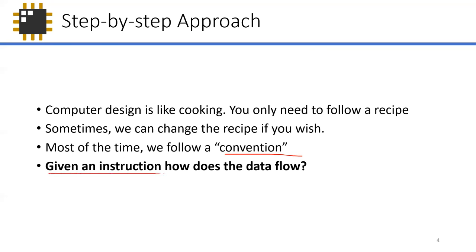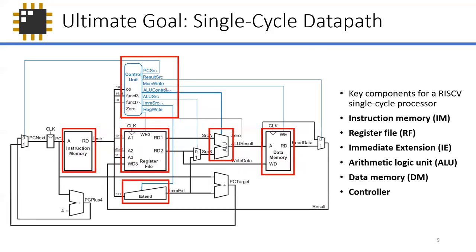For example, if you try to cook sinigang or adobo, you almost always use the same ingredients and the same steps — very little variation. In our lecture, given an instruction, we'll look at how the data flows and then figure out how to control that flow of data. That's it.